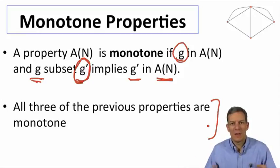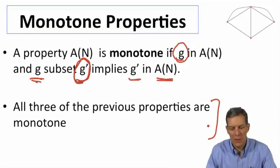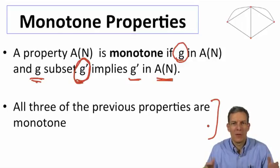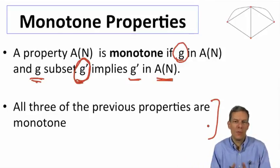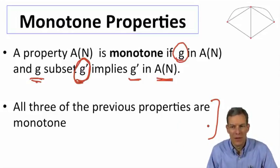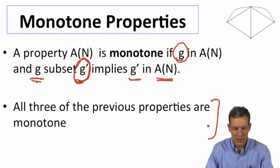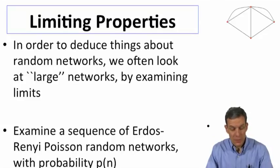It being connected, well, if I add more links, it's still connected. Not having isolated nodes, if I add more links, it doesn't have isolated nodes. So that's a monotone property. The path length is shorter than a certain amount. If I add extra links, it still has a short path length. So these are nice properties that will be easier to work with. They don't sort of blink on and off as we change the link pattern.